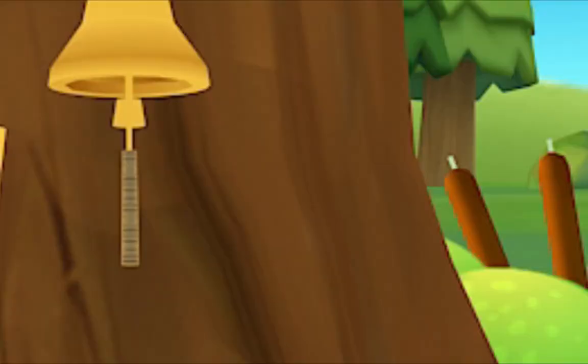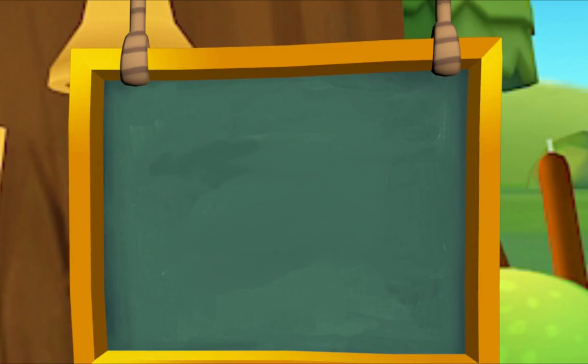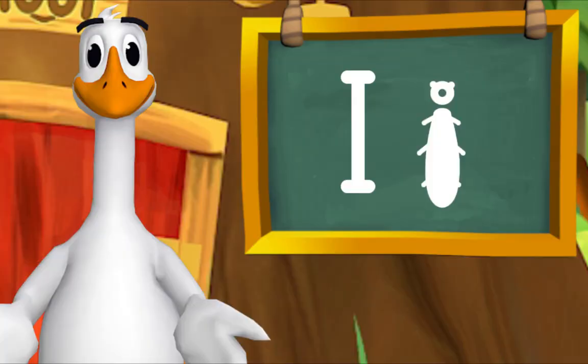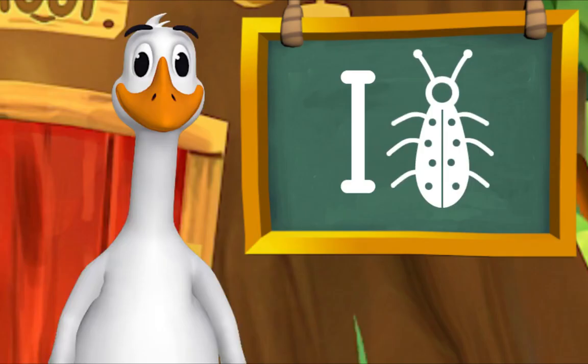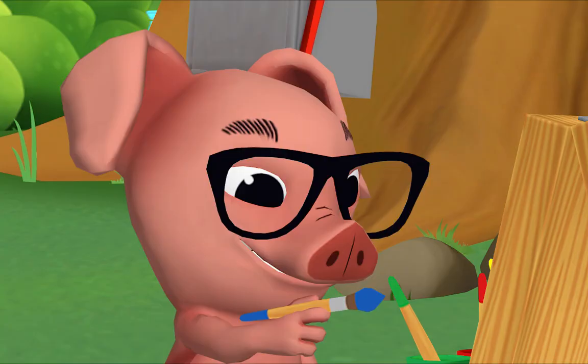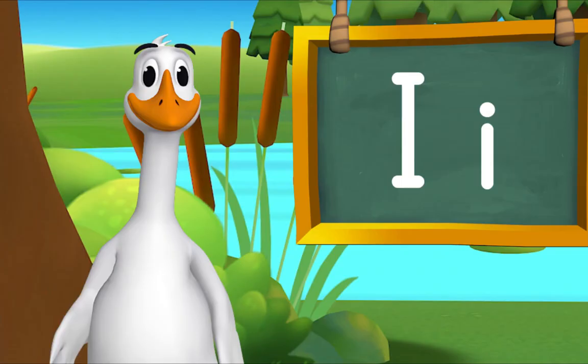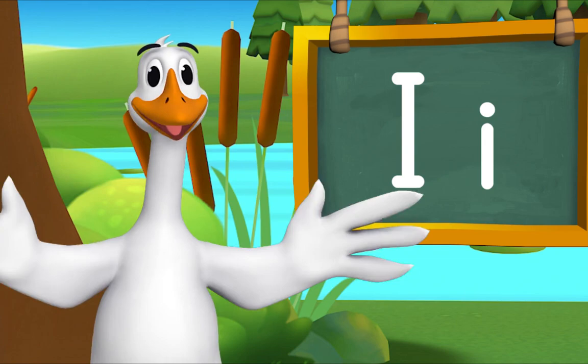Today's letter is I. I makes the sound 'i' — in insect, Pig. Repeat after me: I, I, insect! I, I, insect! Now you try: I, I, insect! Well done! Oh, that gave me an idea — I'm going to paint an insect! That's an excellent idea. Let's try to think of more things that begin with I.